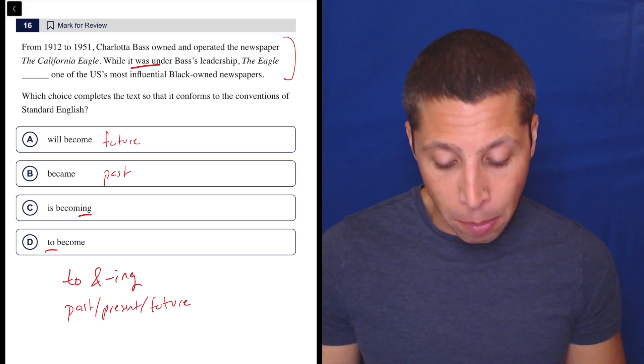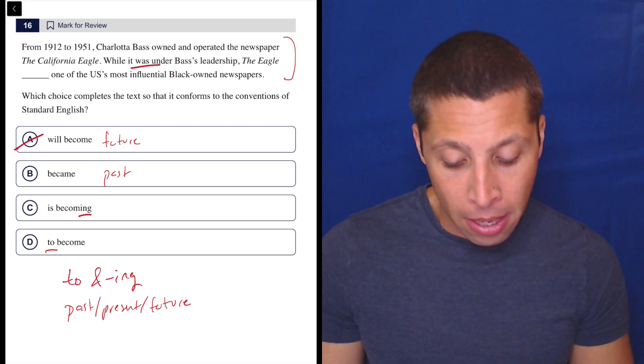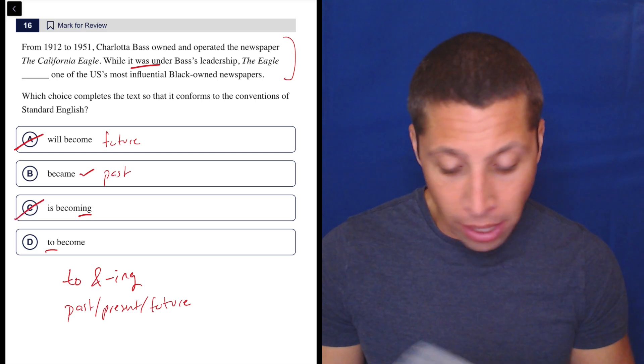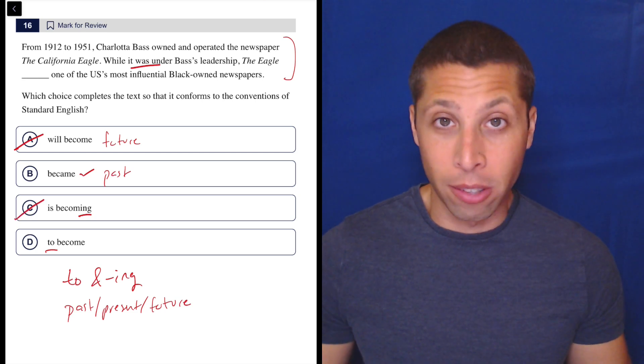Well, it was under it. So this is the past tense. So it's not the will become. Became seems right. What about these other ones? The Eagle is becoming? No, it's already, it was 1912 to 1951. So it's already over.